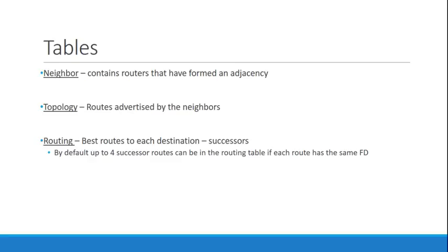The topology table consists of all the routes advertised by its neighbors. So if I'm sitting on R1 and it's connected to R2, R3, and R4, and they've formed an adjacency — which in classic configuration means they agree on the autonomous system number — then R2, R3, and R4 will show up when I do a show IP EIGRP neighbors. They'll also let R1 know about all the routes they have, and all of those will be maintained in the topology table.